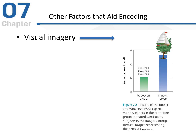Moving on to other things that can aid in encoding: visual imagery helps. In this particular example, participants were in either a repetition group or an imagery group. The repetition group was told to just repeat paired words over and over again — for example, boat, tree. The imagery group was actually told to group a boat and a tree together to make a visual image. What we see is better recall when visual imagery is used versus repetition.